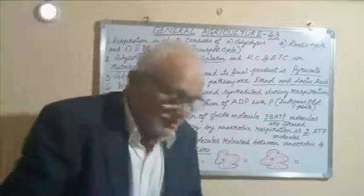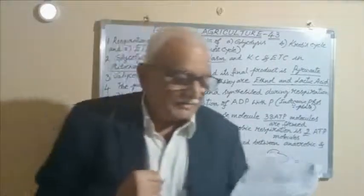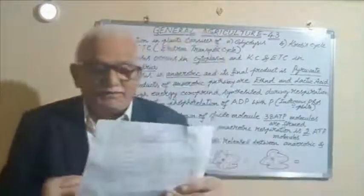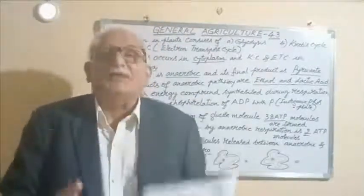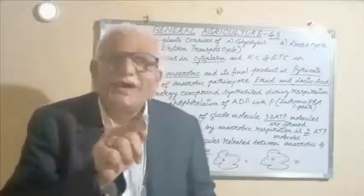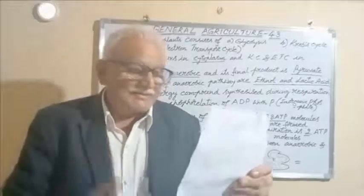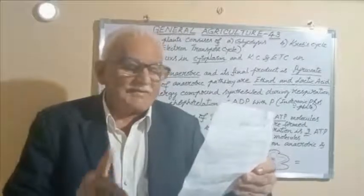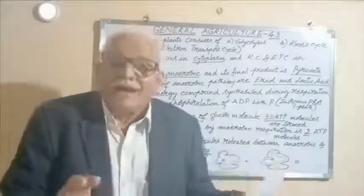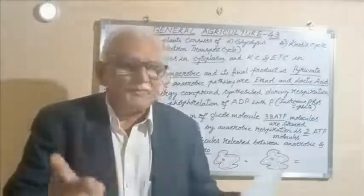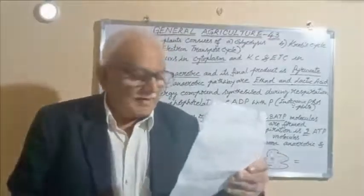The number of CO2 molecules released between aerobic and anaerobic respiration is zero. The ratio of energy released between anaerobic and aerobic respiration is 1:18. Total ATP synthesis in glycolysis is four, and net gain is two ATP molecules.